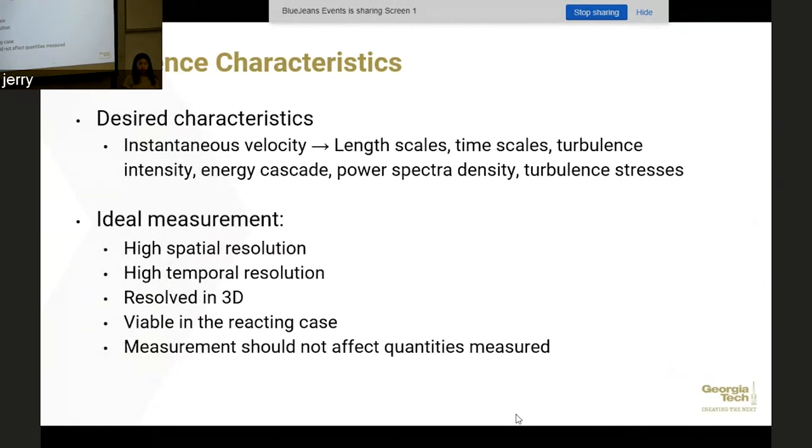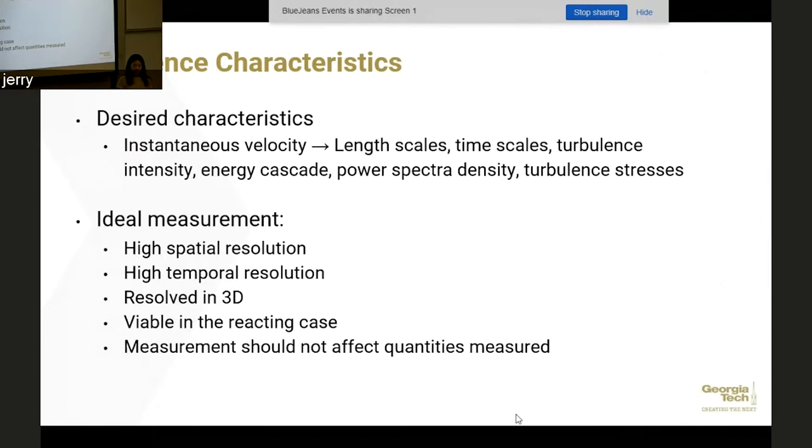Some of the turbulence characteristics that we would want to measure using these methods: all of these methods measure the instantaneous velocity, which then can give rise to length scales, like the size of the largest features in the flow and the smallest features like the Kolmogorov scale, as well as time scales which correspond to basically how those scales move through time. You also have the turbulence intensity which is just the variation in velocity over the mean velocity. There are a few other metrics including energy cascade, power spectral density, and the turbulent stresses.